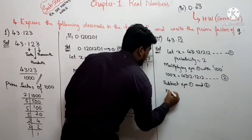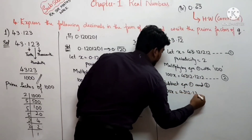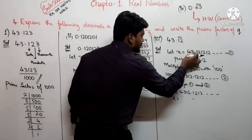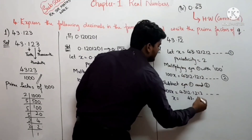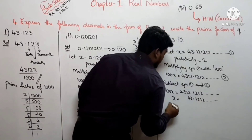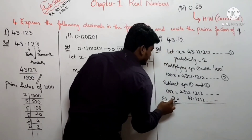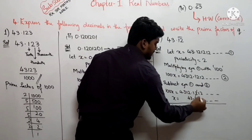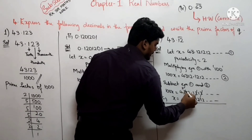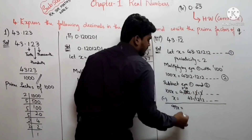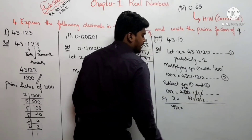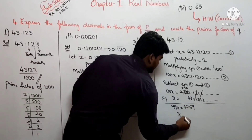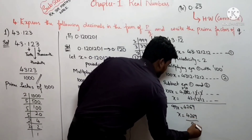100x = 43.\(\overline{12}\) × 100 = 4312.\(\overline{12}\), this is equation 2। Subtract equation 1 from equation 2: 100x − x = 99x = 4312.\(\overline{12}\) − 43.\(\overline{12}\) = 4269। इसलिए x = 4269/99।